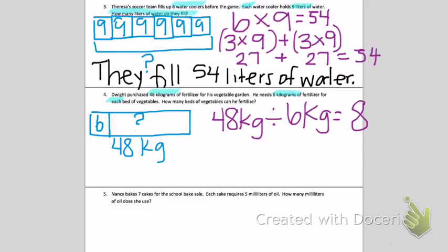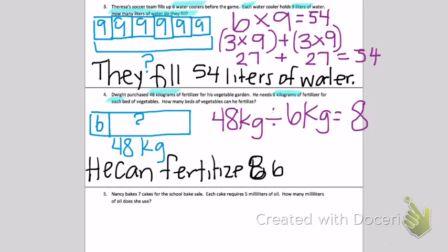Let's write a sentence. How many beds of vegetables can he fertilize? He can fertilize 6 beds. Oops, not 6. 8 beds. He can fertilize 8 beds. I'm going to give you a minute to write that down.